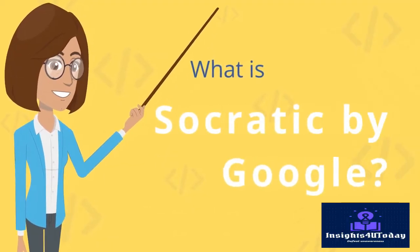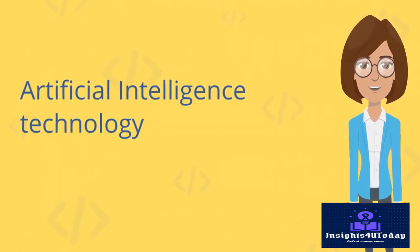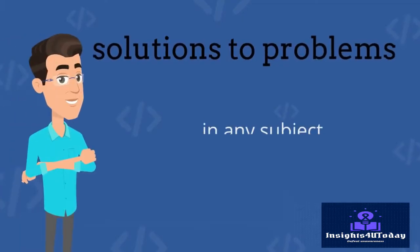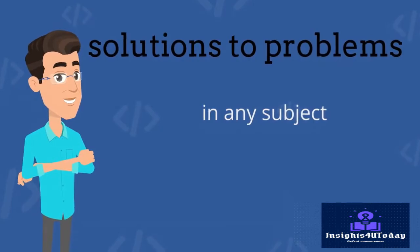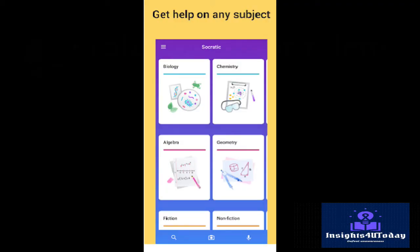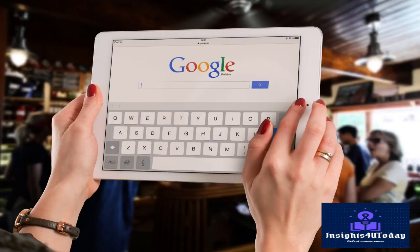What is Socratic by Google? Socratic by Google is an artificial intelligence technology that assists students with their homework by delivering solutions to any problem and educational materials such as videos, definitions, Q&A, links, and more. It is specifically helpful for mathematical problems.